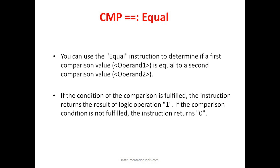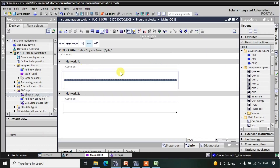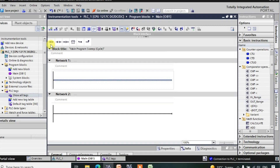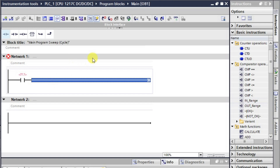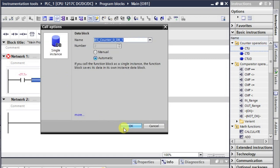The equal to instruction is used to check whether one input is equal to another input or not. Whenever the first input is equal to the second input, the output will be in the high state; otherwise it will be in the low state. To demonstrate this in TIA Portal, we'll build a logic using a counter to change values.